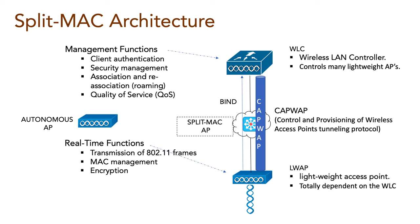The protocol encapsulates the data between the access point and the WLC within new IP packets, and can be switched or routed across the network. The CAPWAP tunneling allows the AP and WLC to be separated geographically and logically, and breaks the dependence on layer 2 connectivity between them.